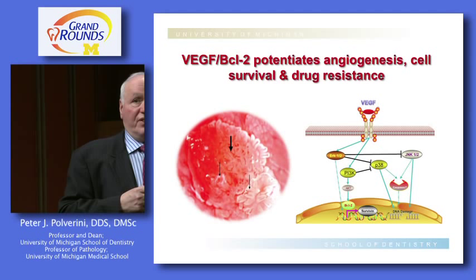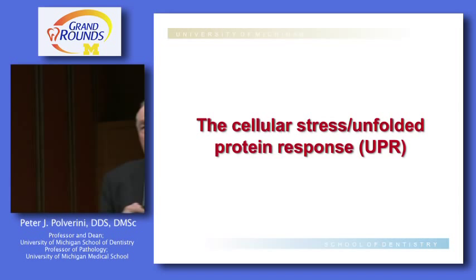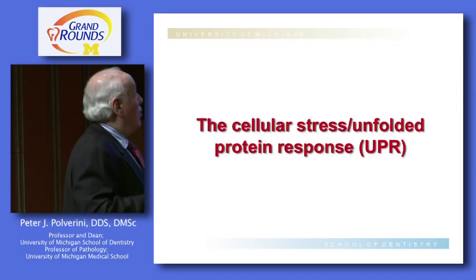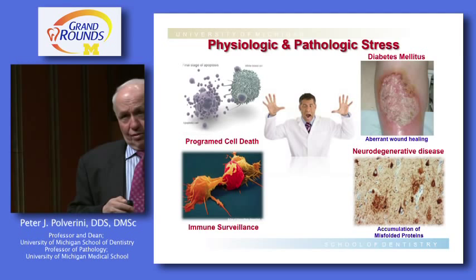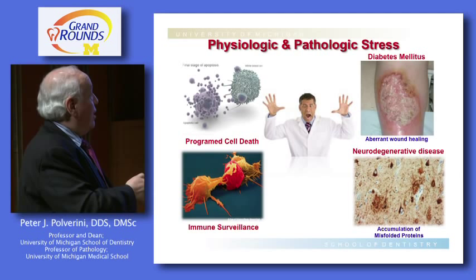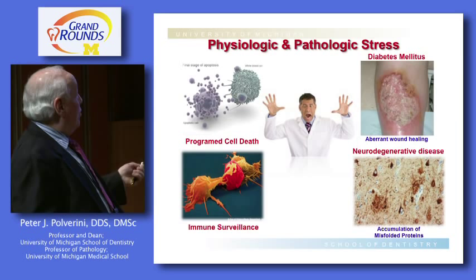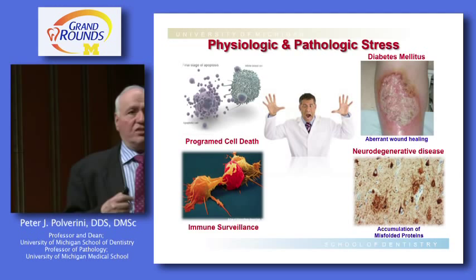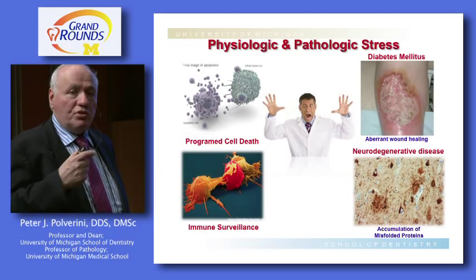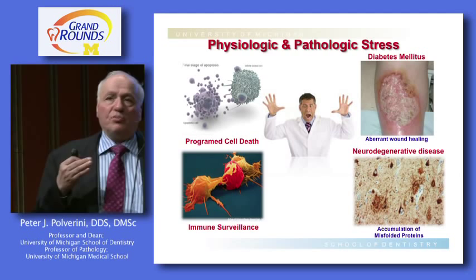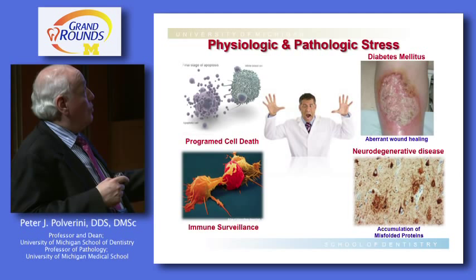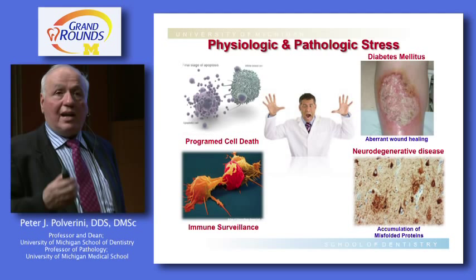Where does the unfolded protein response fit into the picture? The stress response occurs in many different environments — important physiologically and pathologically. It plays a role in programmed cell death. Any time you have a physiologic response that demands increased protein turnover, you introduce a stressful environment. Inability to respond appropriately to stress can lead to tissue damage and disease — seen in aberrant wound healing, diabetes mellitus, and accumulation of unfolded and misfolded proteins, for example in Alzheimer's disease.